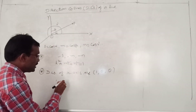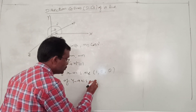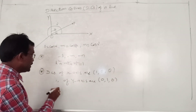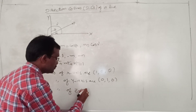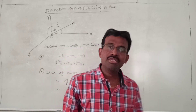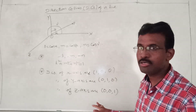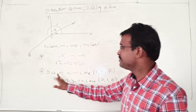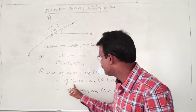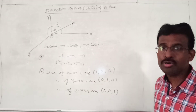Similarly, the direction cosines of the Y axis are 0, 1, 0. And the direction cosines of the Z axis are 0, 0, 1. These are the direction cosines of the coordinate axes. Simply remember: direction cosines of the X axis are 1, 0, 0; direction cosines of the Y axis are 0, 1, 0; direction cosines of the Z axis are 0, 0, 1.